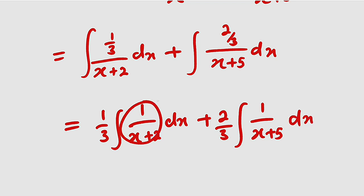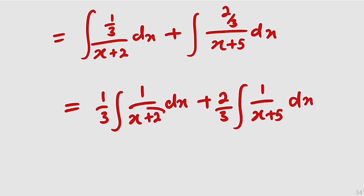Now we are free to integrate these two functions separately. So just observe, the moment you differentiate this, x+2, you're going to obtain 1. So whenever the derivative of the bottom is exactly as the top, just take the natural log of the absolute value of the denominator. So this is equal to 1/3 times the natural log of the absolute value of x+2.